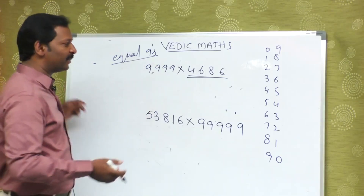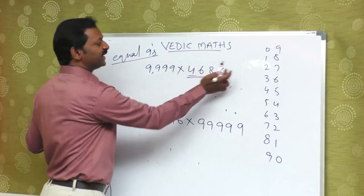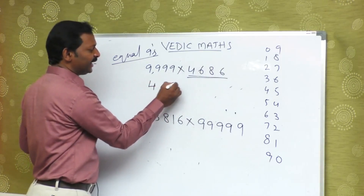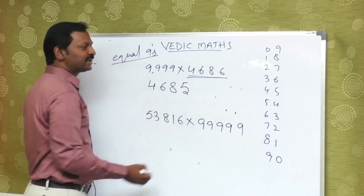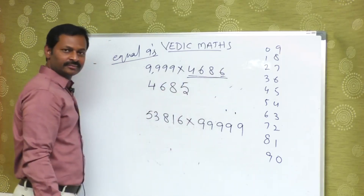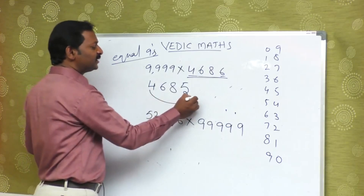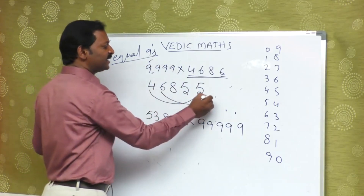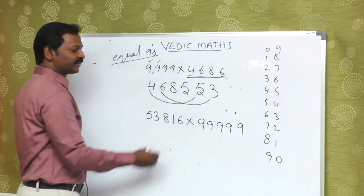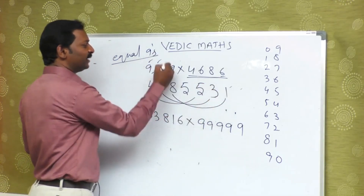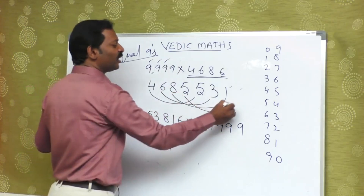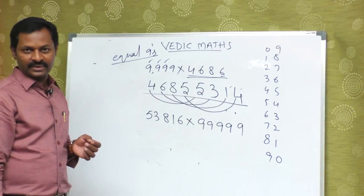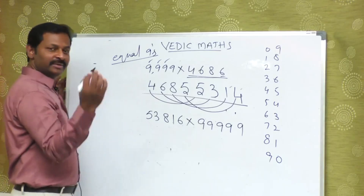So first, the number is 4, 6, 8, 6. Then the answer starts: 4, 6, 8, 5. After 5, what comes next? The combination of 4 makes 5; the combination of 6 is 3; the combination of 8 is 1; the combination of 5 is 4. That's it — this is the right answer. I hope you understood. Now tell me this answer.